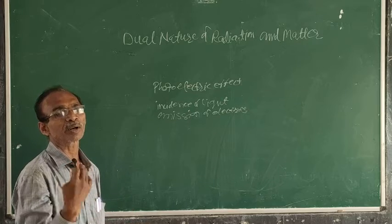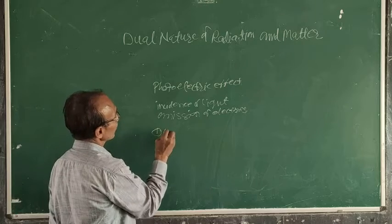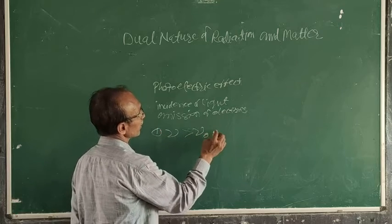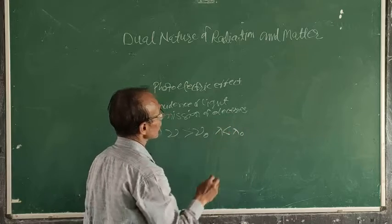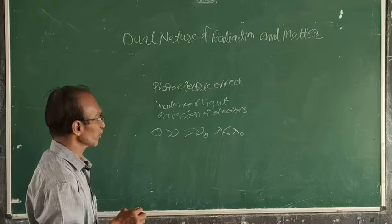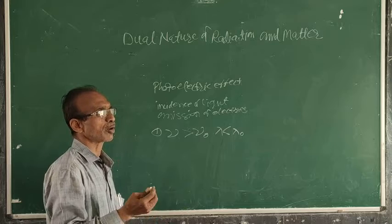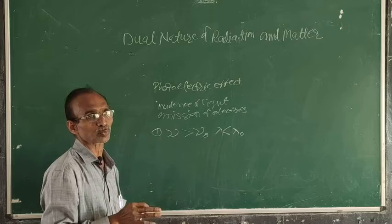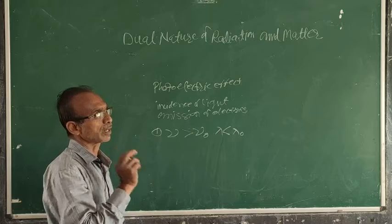We have learned the experiment. In that experiment, we came to know that ν must be greater than ν₀. In other words, we can say λ is less than λ₀. In the second finding, we came to know about intensity. In the third, we came to know about velocity — the factors that affect this whole process: one is the intensity, another is the frequency.